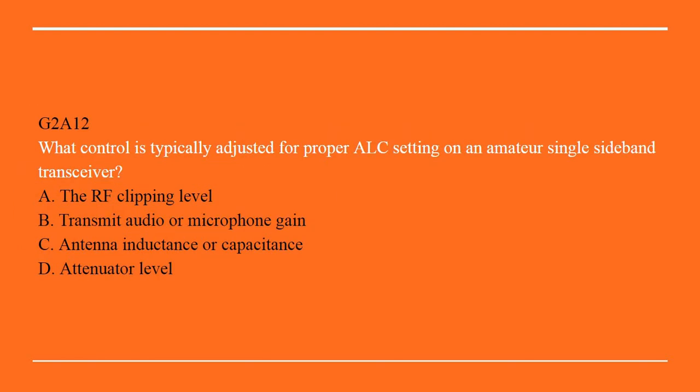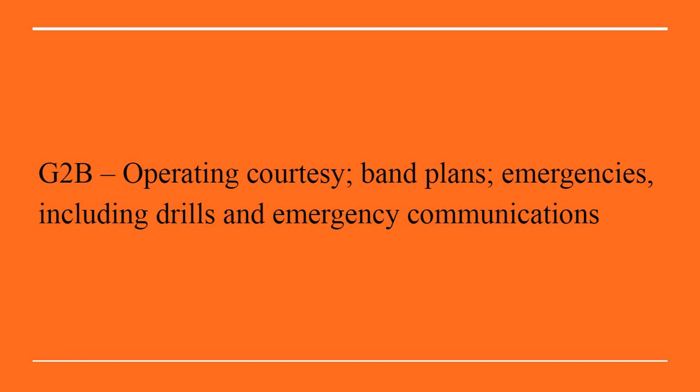G2A12: What control is typically adjusted for proper ALC setting on an amateur single sideband transceiver? A. The RF clipping level. B. Transmit audio and microphone gain. C. Antenna inductance or capacitance. Or D. Attenuator level. Correct answer B: Transmit audio or microphone gain. Now on to G2B: Operating Courtesy, Band Plans, Emergencies including drills, and Emergency Communications.